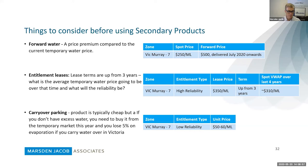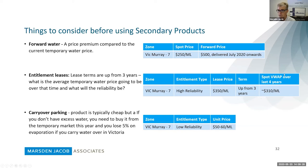For entitlement leases, terms are usually three years and up. You need to think about what the average temporary water price will be over that period and what the reliability of the entitlement type will be. For Zone 7 higher reliability, the lease price at the moment could be around $350 per megalitre, while the spot VWAP over the last four years has averaged $310 per megalitre. You need to consider the cost trade-off between products, noting that's an average price and there has been considerable year-on-year volatility.